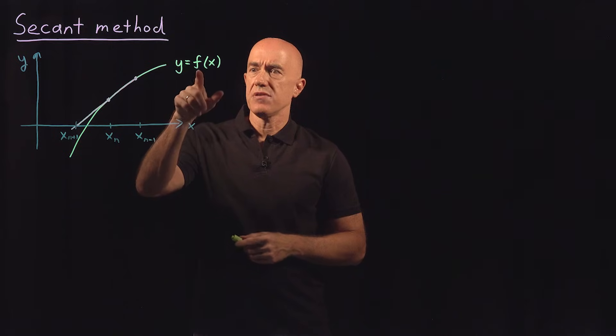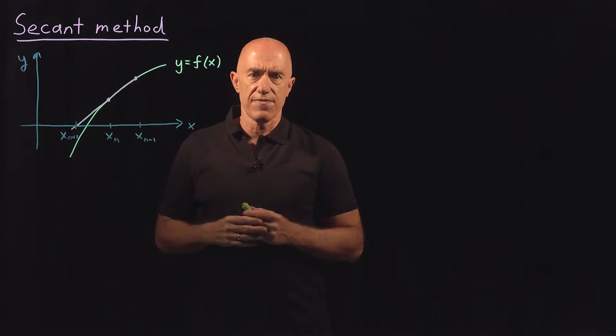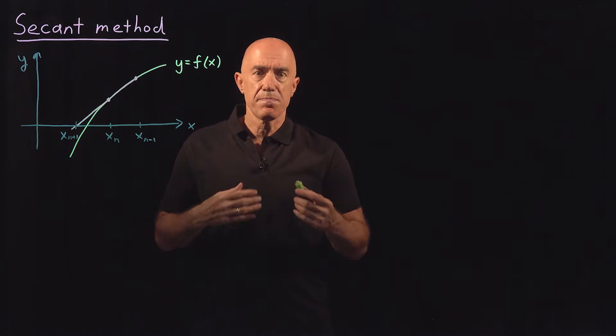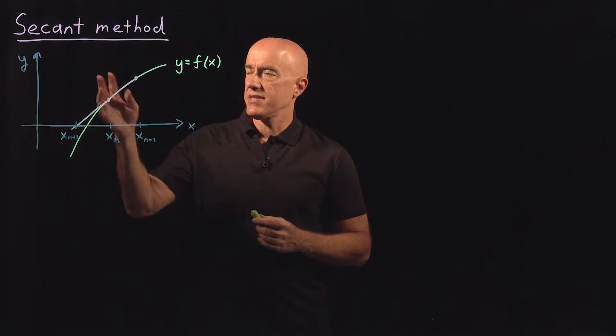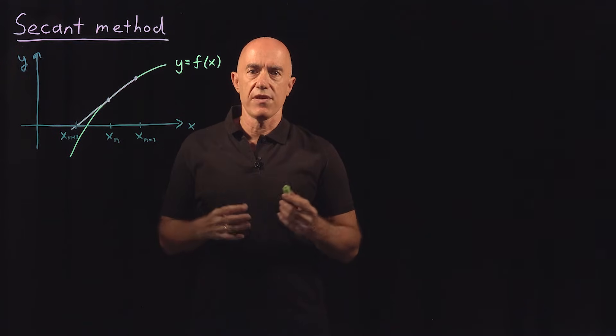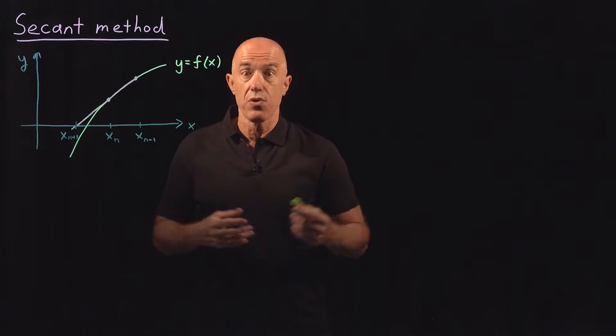But for Newton's method, you need to be able to take the derivative of the function that you're finding the root of. Sometimes that's not possible. The next best method is secant's method, where we're going to approximate the derivative of the function using two points on the function.